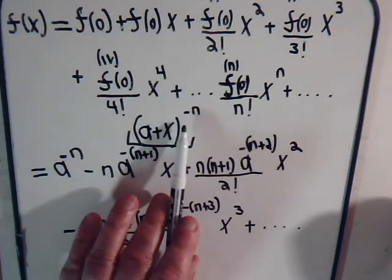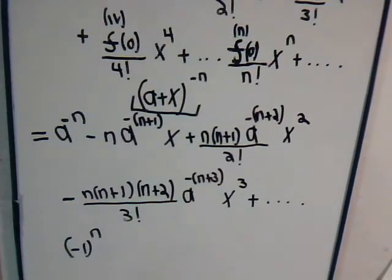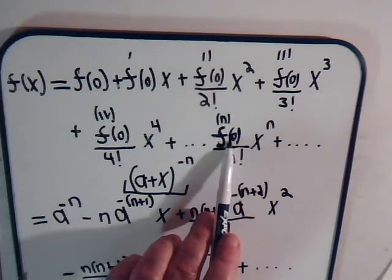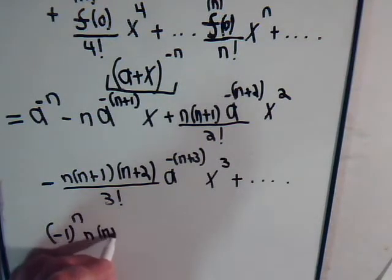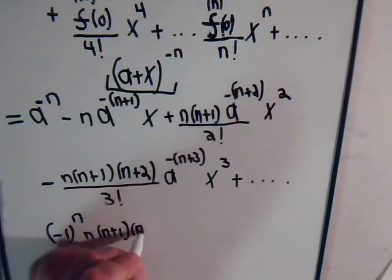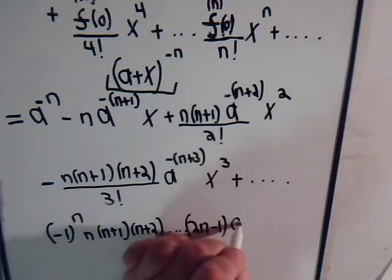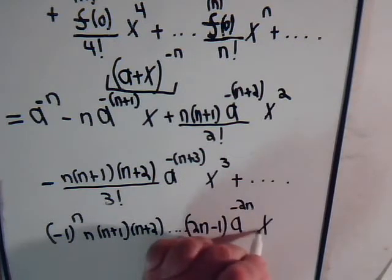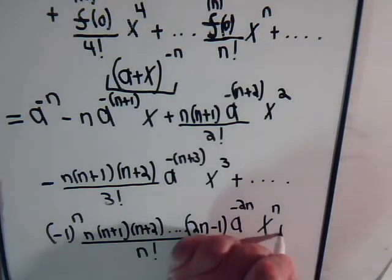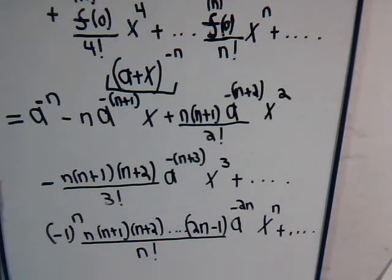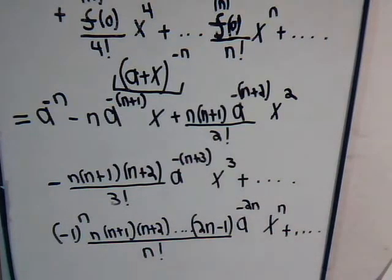Finally, we can get to the nth term, evaluated when x is 0. That is equal to minus 1 to the n times n times n plus 1 times n plus 2, and it keeps going out to 2n minus 1. This is a to the minus 2n power, times x to the n divided by n factorial. And there are an infinite number of terms that come after that. So this now is (a + x) to the minus n written out with a Taylor expansion series.